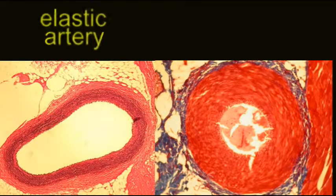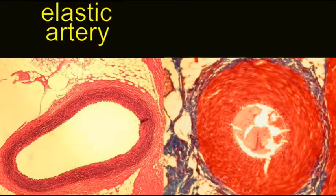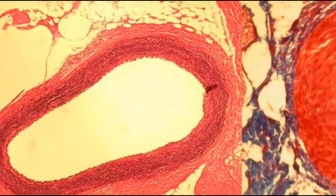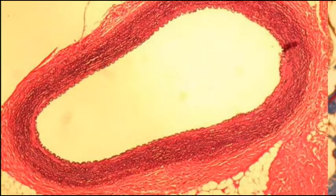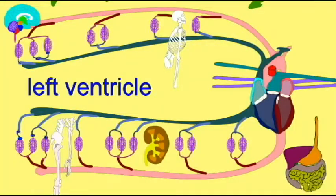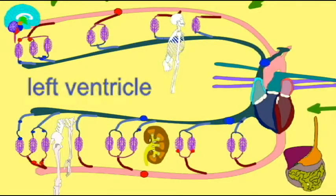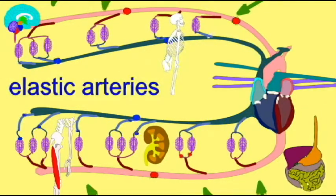When the left ventricle pumps blood, these elastic arteries stretch, not only accommodating the increased volume, but as they recoil to their original position, this helps to provide force which propels the blood onward.